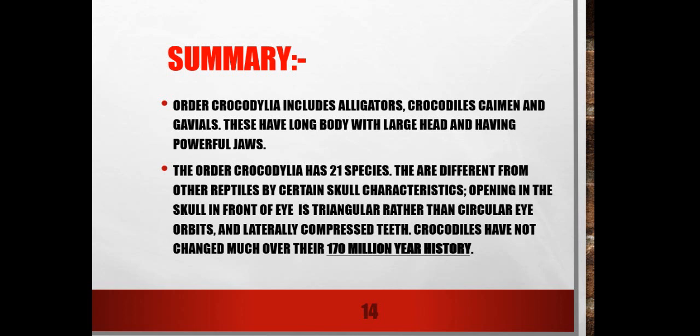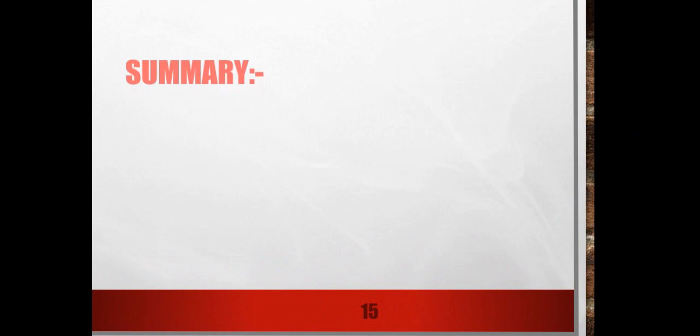Order Crocodylia includes alligators, crocodiles, caimans, and gharials. They have long bodies with large heads and powerful jaws. The order Crocodylia has 21 species. They are different from other reptiles by certain skull characteristics — the opening in the skull in front of the eyes is triangular rather than oval.